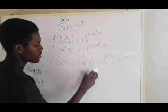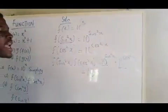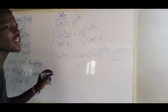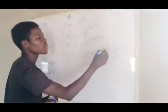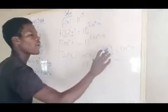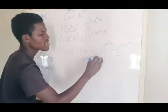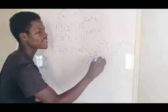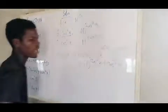Their base are equal, so you are applying indices now. Their base are equal, so if their base are equal, you will add the power. So if you add the power, that would be sin²x plus cos²x. Are you getting that now?